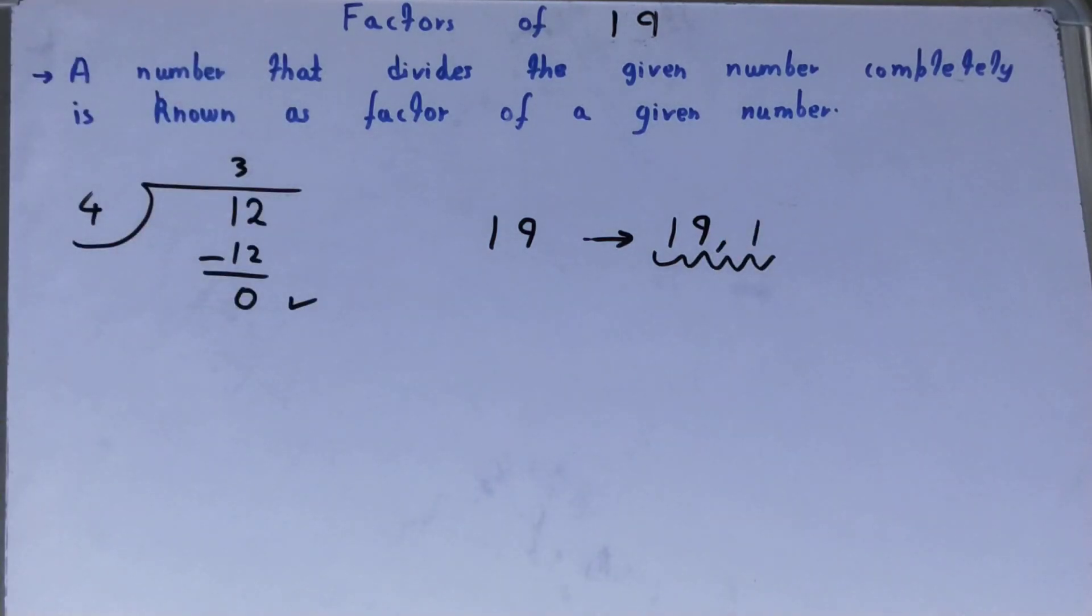So if you spot a prime number, you can easily find out the factors of it like this. All right, so this was all about factors of 19.